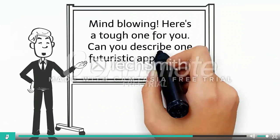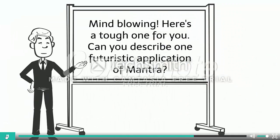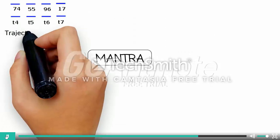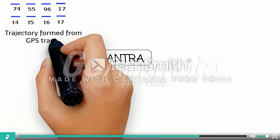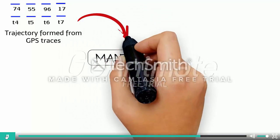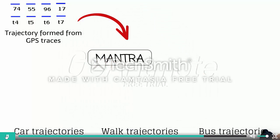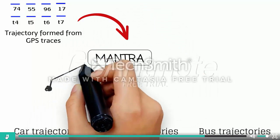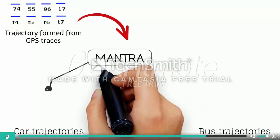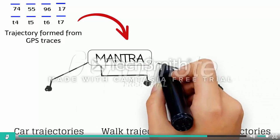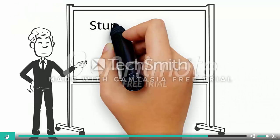Here's a tough one — can you describe one futuristic application of MANTRA? A trajectory is formed from GPS traces. MANTRA contributes in labeling an incoming trajectory according to the accurate vehicle of travel.